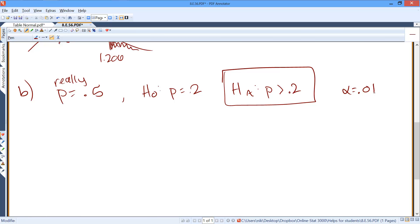So what we're really asking is, what's the probability that we reject the null hypothesis if the population proportion is really 0.5? So we're really asking for the power.